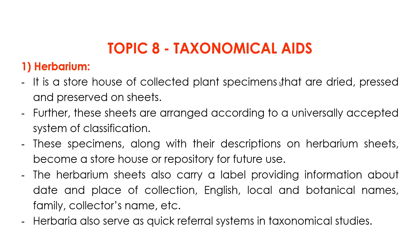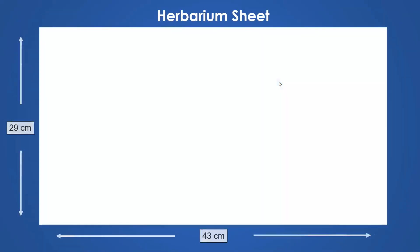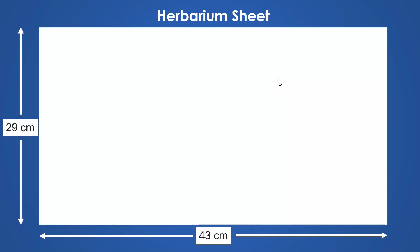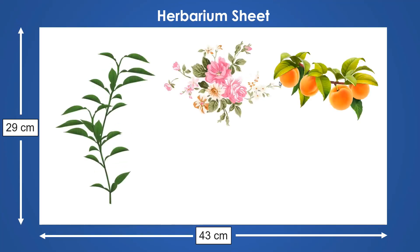The key feature of herbarium involves taking the plant, drying it, and pressing it onto a sheet called the herbarium sheet. This sheet has dimensions of 29 centimeters in length and 43 centimeters in width. Different parts of the plant — root, shoot, leaf, flowers, fruits, types of venation, aestivation, etc. — are pressed onto this sheet.